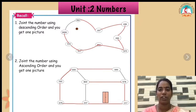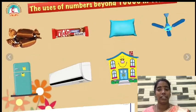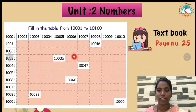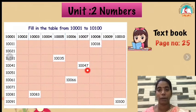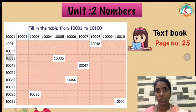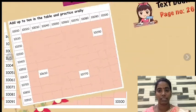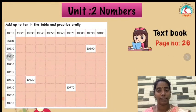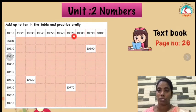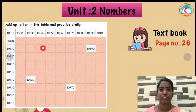Now, we are going to see the next one. In your textbook, page 25, fill in the numbers beyond 10,000. You have to write 10,001 up to 10,100. Quickly finish, children.